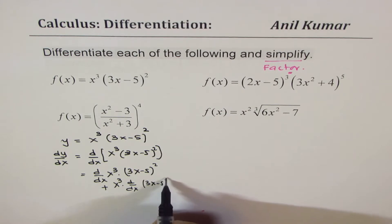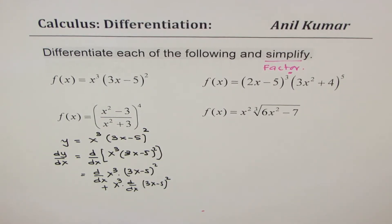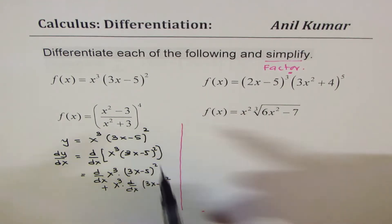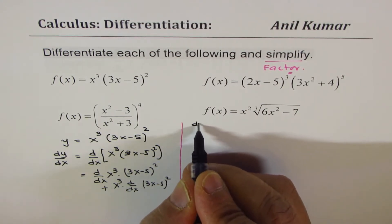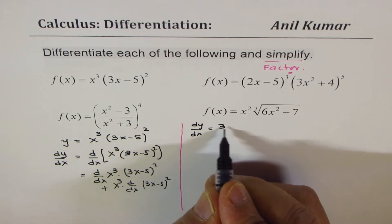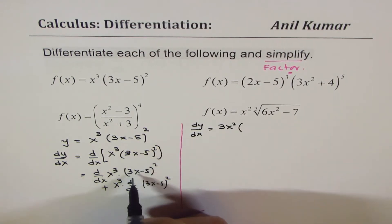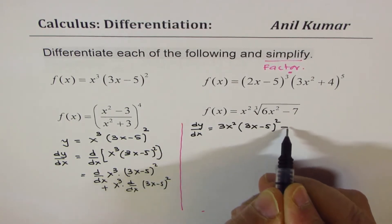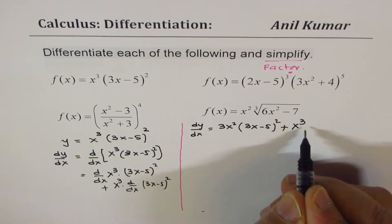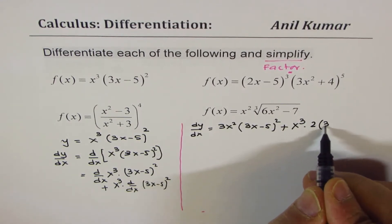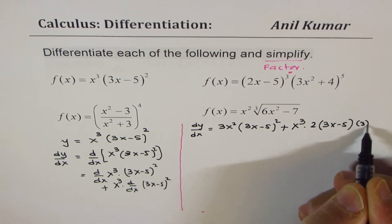Which is 3x minus 5 whole squared. So in this first example, I'm going through all the steps which I'll not go through in the next example — try to understand the whole process, then we'll do it faster. Derivative of x cubed is 3x squared times the other function, which is 3x minus 5 whole squared, plus x cubed times the derivative.